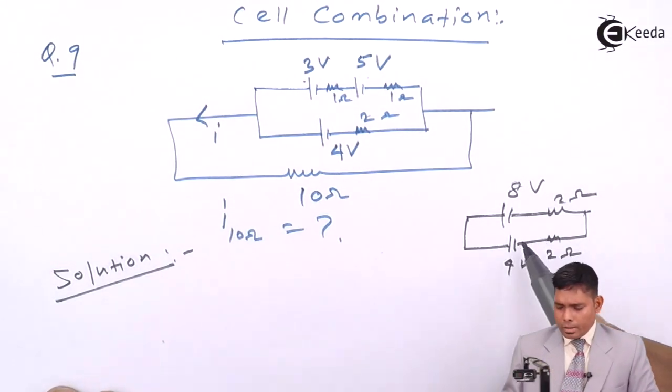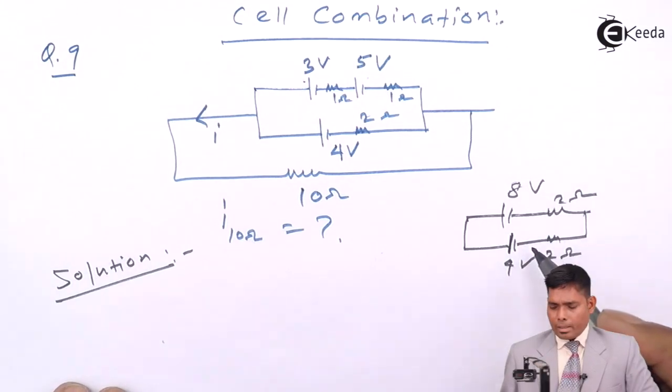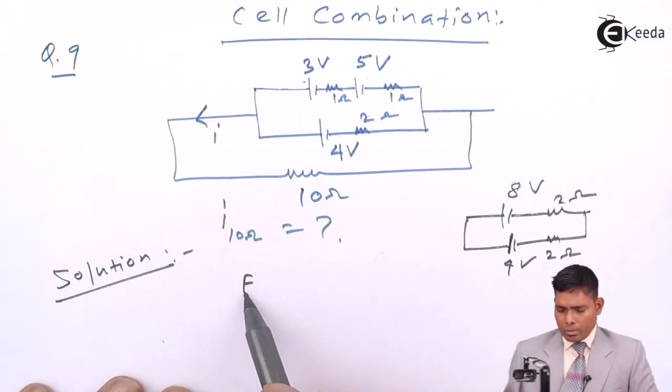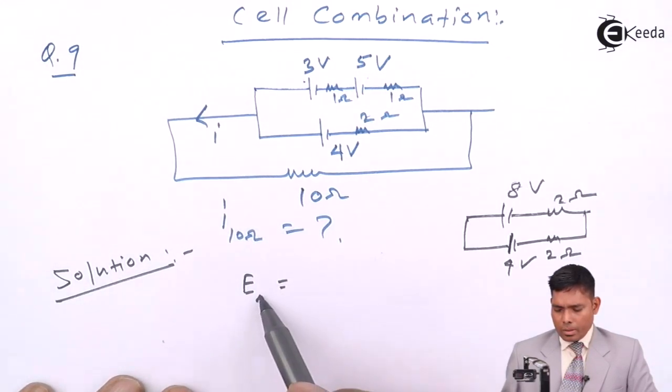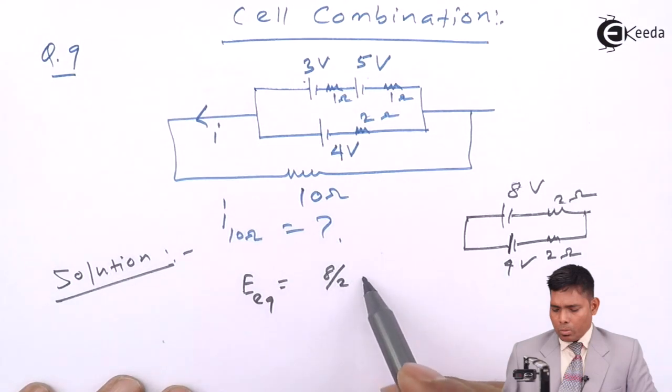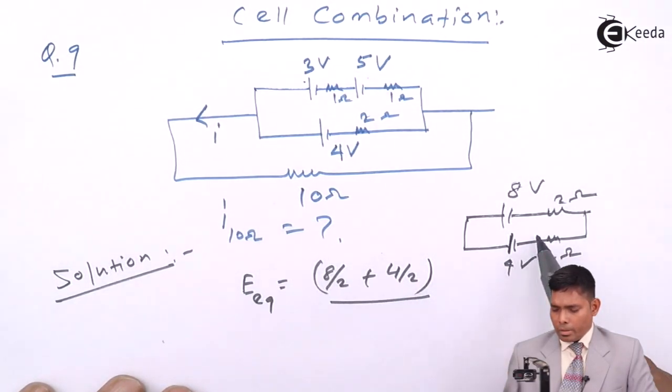Now this is a cell, two cells are in parallel combinations. In case of parallel combinations, we have already known that equivalent E, E equivalent will be